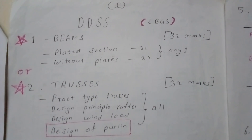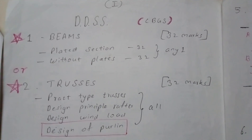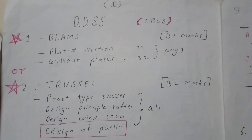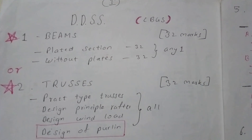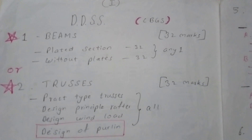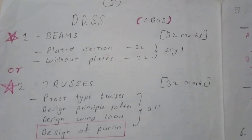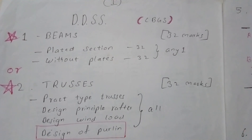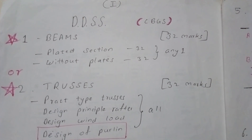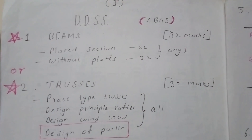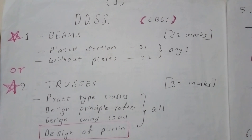The first topic is Beams, which is the first question of the question paper, where the question asks you to design beams. In this topic, there are two types of numericals that can be asked: one is plated section and the other is without plates. Without plates is asked most commonly, and plated section is very rarely asked.